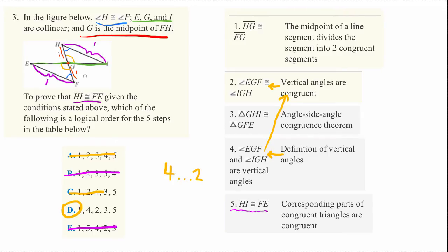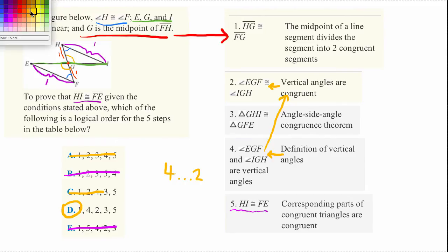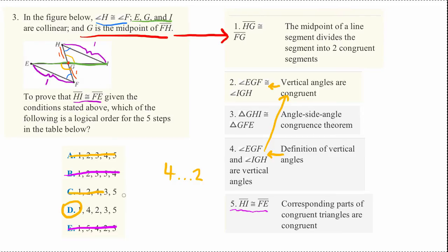And then it said that if something's the midpoint, those two links must be the same. And that was proven. So that's why this can be the first step. Because it proceeds directly from information that we had in the prompt.